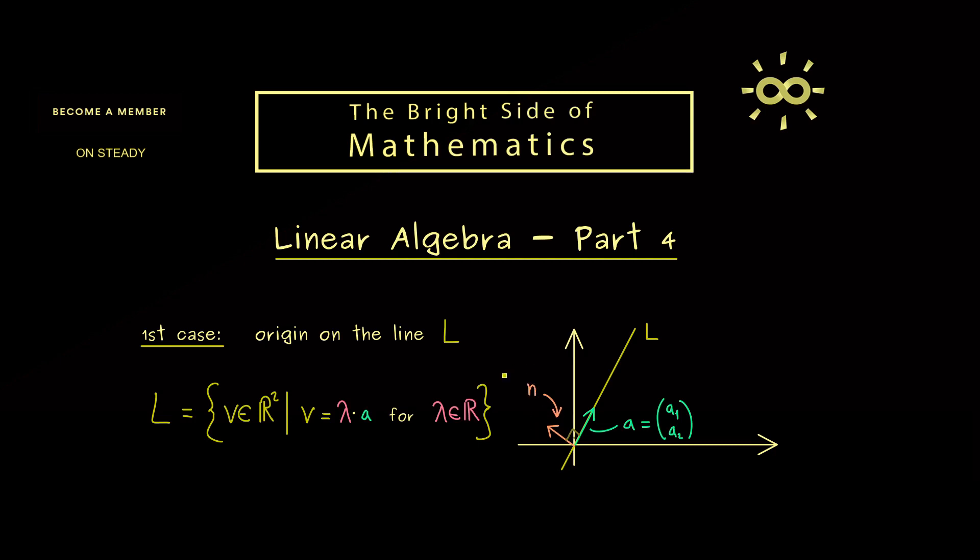So for the moment let's call this new vector here simply N. And now what you should see is this N is perpendicular to the whole line L. Hence this is an alternative description for the line L.